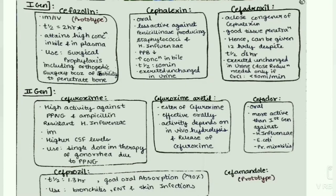Now we will move to specific drugs of all the cephalosporins. From the first generation, cefazolin is given IM or IV. It is the prototype drug. The T-half is 2 hours. It attains high concentration in the bile and in the plasma. Its use is mainly surgical prophylaxis, including orthopedic surgery, because of its ability to penetrate bone.